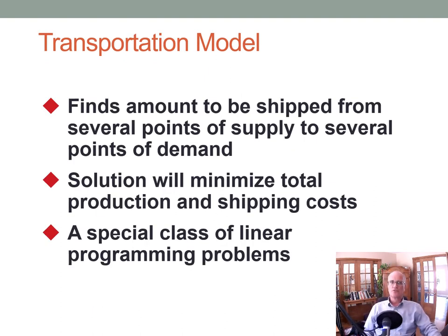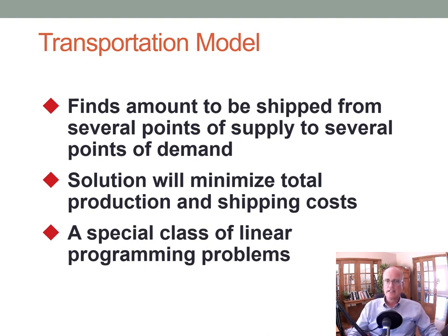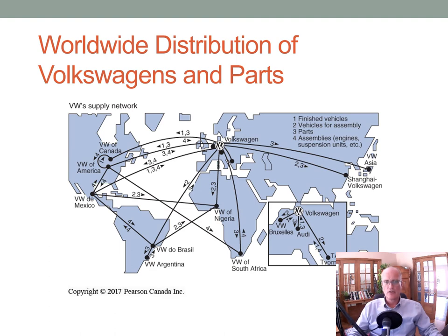The transportation model is similar to the center of gravity model but looks at a single location using a load-distance score. It finds the amounts to be shipped from several points of supply to several points of demand, picking the option based on minimum total production and shipping costs. It is a special class of linear programming models. For example, Volkswagen produces cars in many locations and must decide where to produce and ship each model — they evaluate distances and volumes to arrive at a plan that minimizes costs across several different choices.